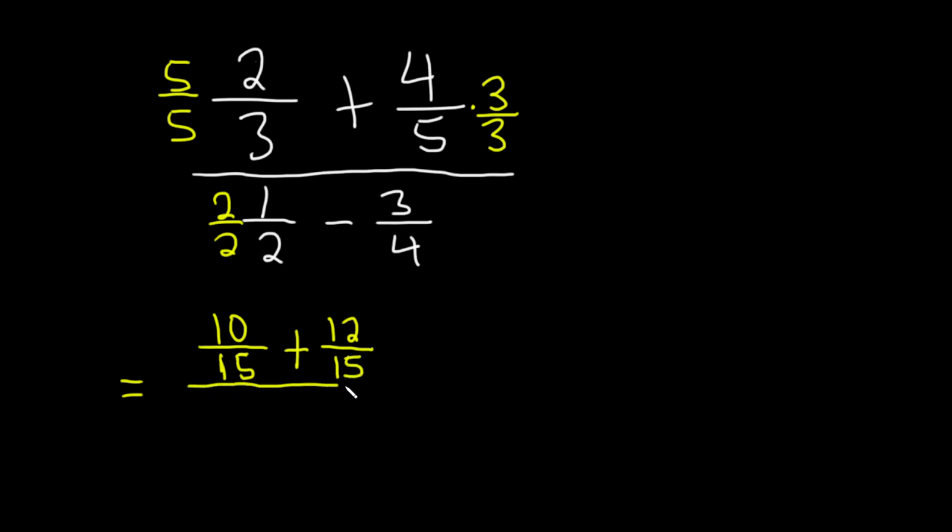All of this is being divided by, let's see, two times one is two, two times two is four, minus three over four.